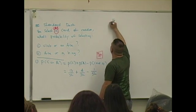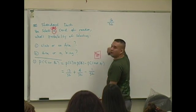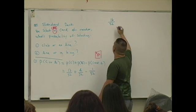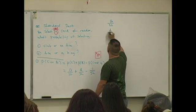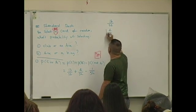So it becomes sixteen over fifty-two. What is that reduced to? Four over thirteen.